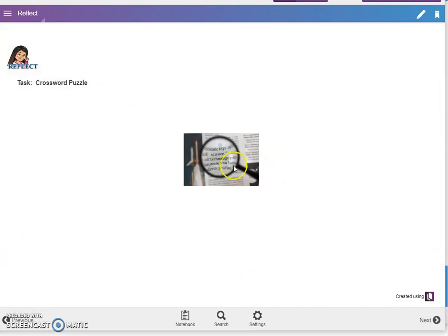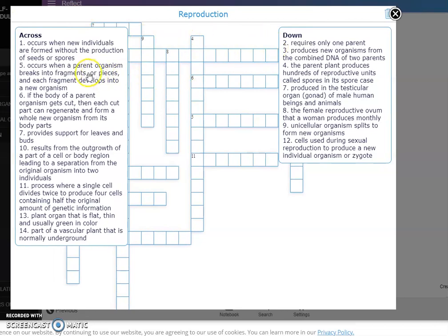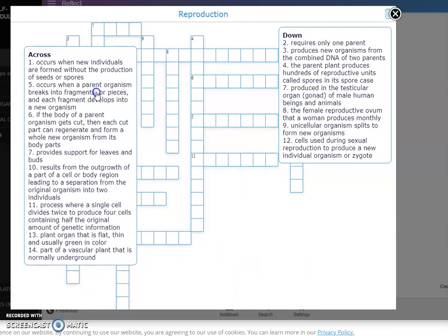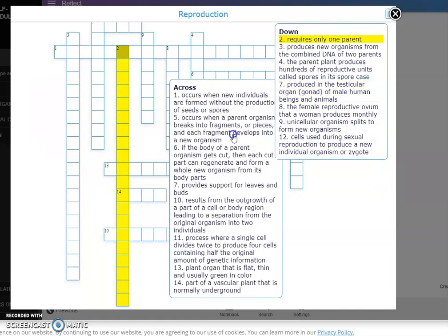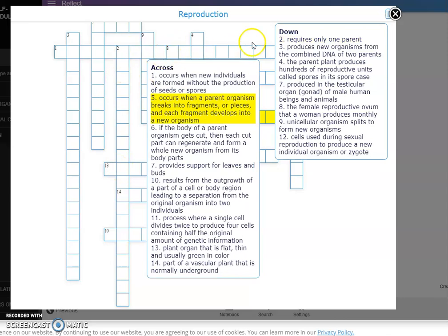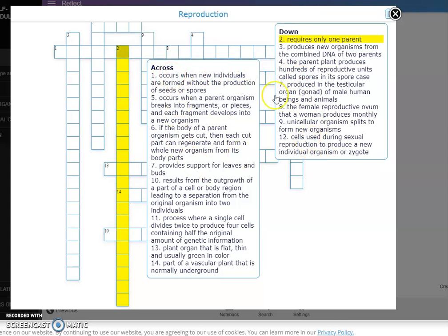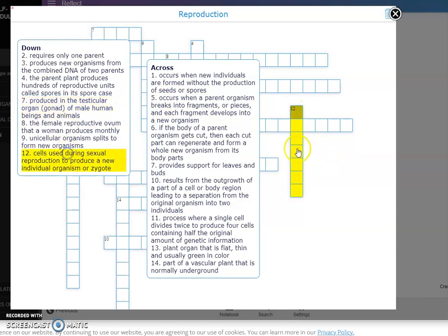Then proceed to the next part. Reflect. So this is a crossword puzzle. Just click on the picture. And you will be prompted with this on your screen. So actually you can drag this because it covers the part where we are going to write the answer. So all you have to do, for example, if it requires only one parent, just drag it here so that you can write the answer here. Requires only one parent. So what do you think is that? Since it was covered, you can just drag it. Then just type your answer using your keyboard. Just clear.